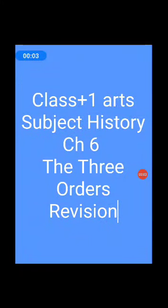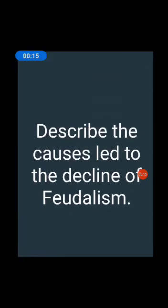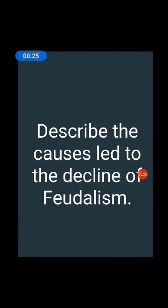Good morning students. Today we revise chapter number 6, The Three Orders. Subject: History. First of all, describe the causes that led to the decline of feudalism. Feudalism flourished in Europe from the 8th to the 12th century; however, it began to decline in the 15th century. The following causes led to its downfall.